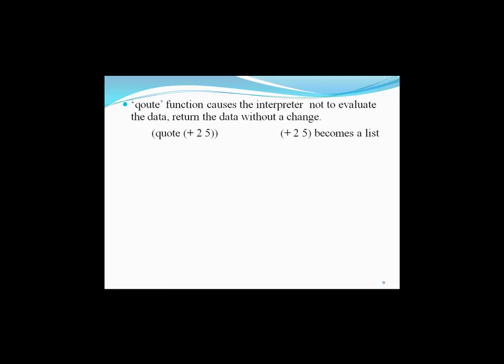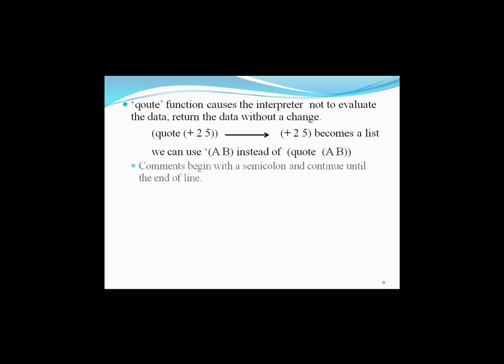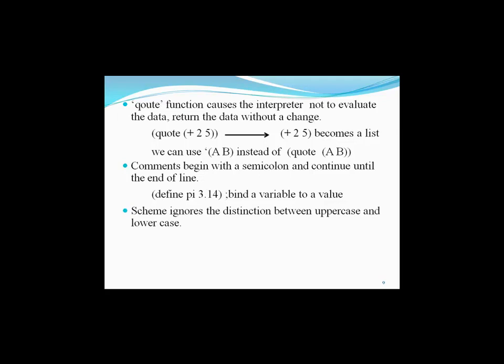The quote function calls the interpreter not to evaluate data, so it returns data without change. (quote (+ 2 5)) returns the list (+ 2 5). Instead of using (quote A B), we can use the apostrophe shorthand '(A B). Comments begin with a semicolon and continue to the end of the line. The define function binds a variable to a value, for example (define x 3.4). Scheme ignores the distinction between uppercase and lowercase, so you can use either to define names.